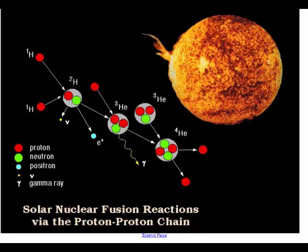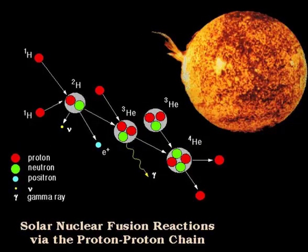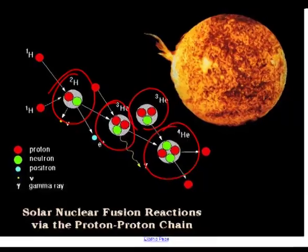One of the energy conversions we rely upon is what takes place inside the Sun — a fusion reaction. Small particles such as deuterium unite with tritium to make a larger helium atom. In this reaction, we release a tremendous amount of heat. This is nuclear energy being converted into thermal energy.